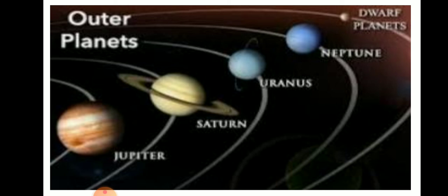Jupiter is called Dehespati, Saturn is called Shani, Uranus is called Arun, and Neptune is called Varun. Jupiter is a gas giant and the largest planet in our solar system, and it spins faster than any other planet.